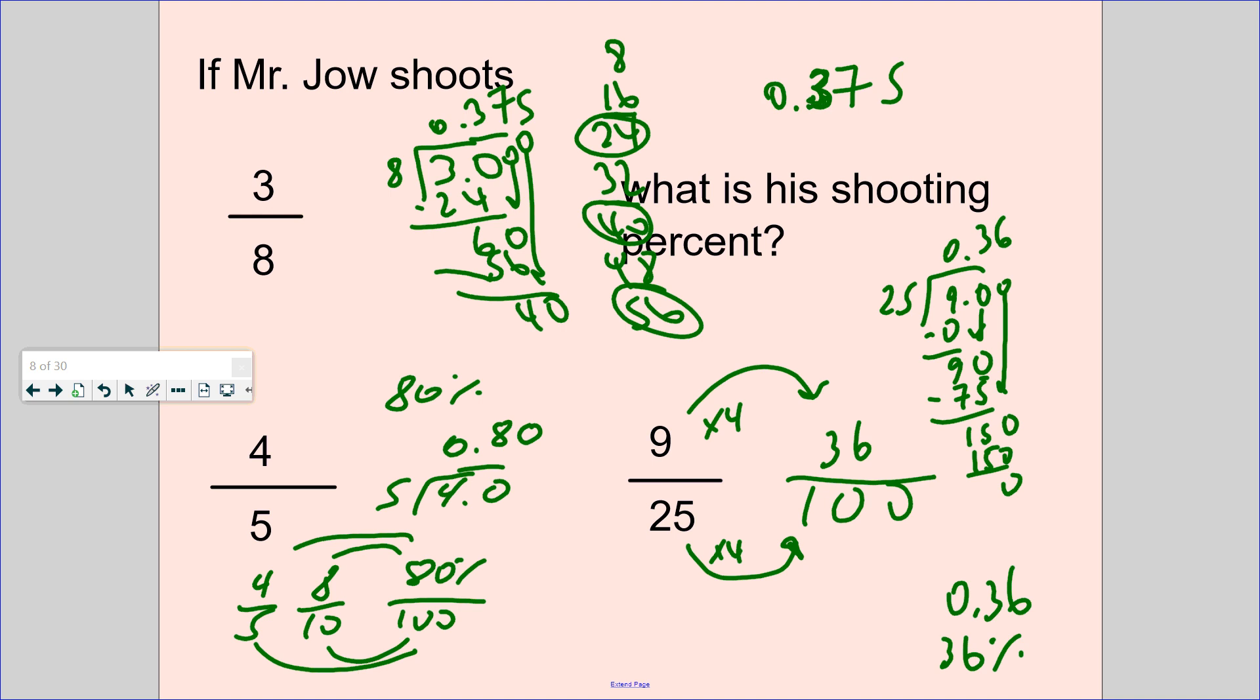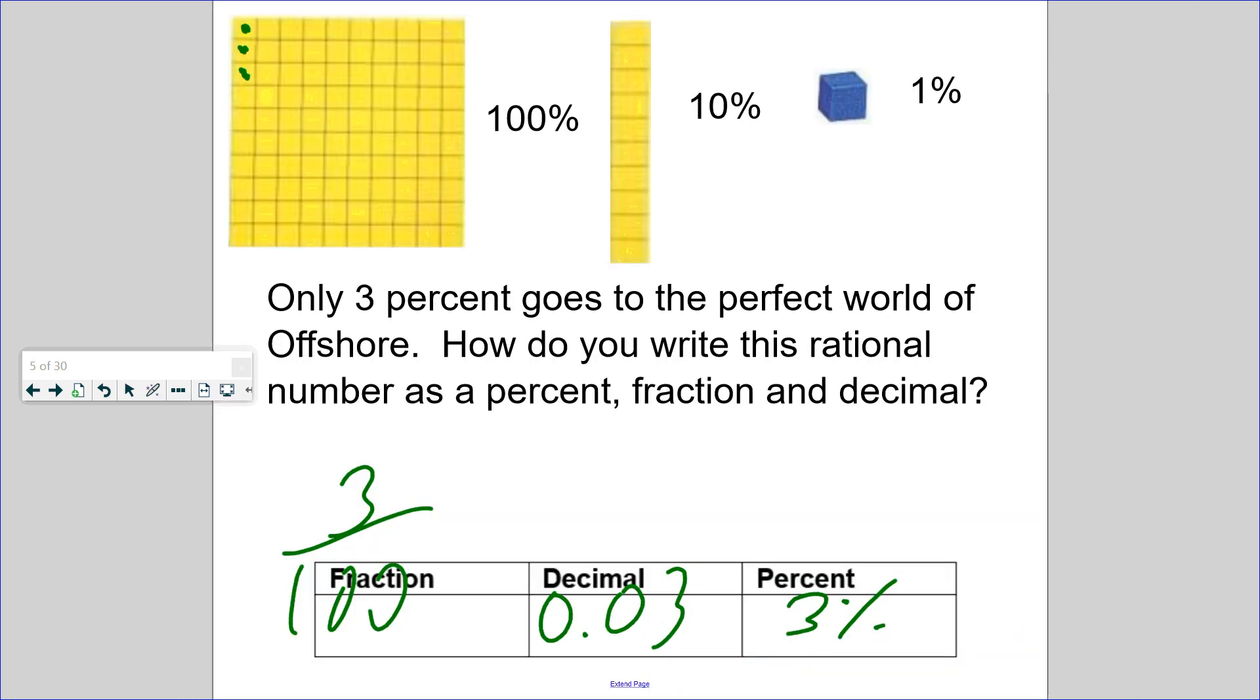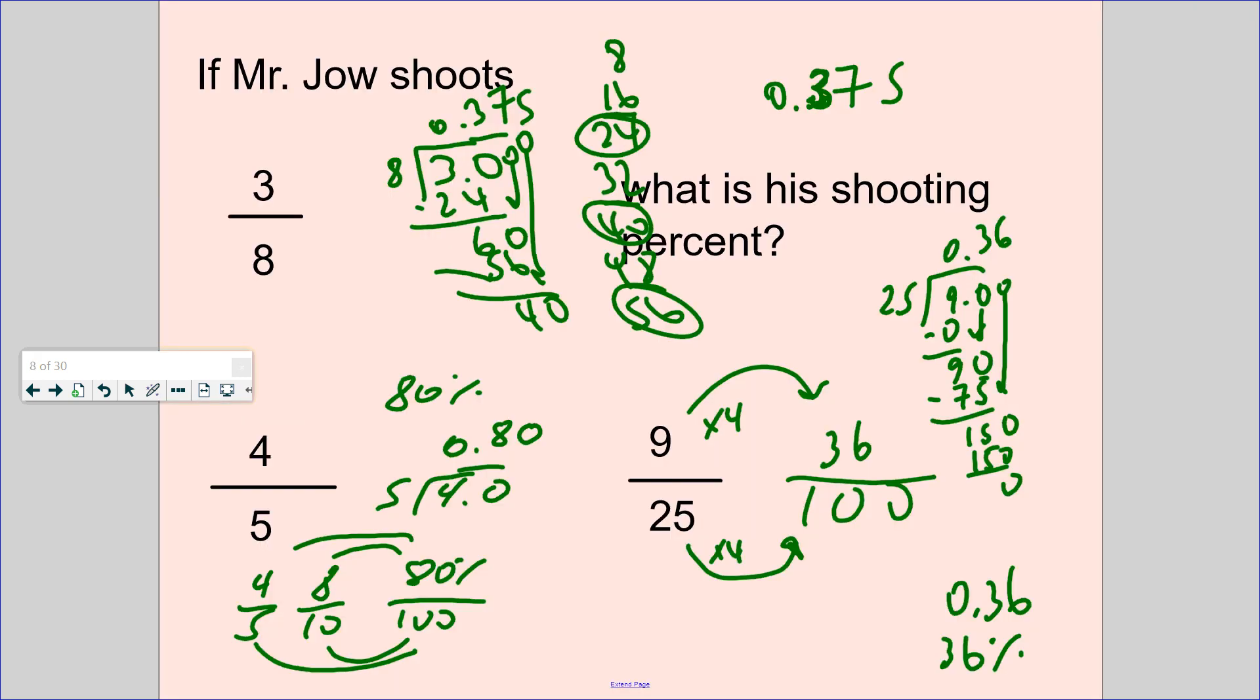So what percent is that? Let's think about our grid right here. If I shade in 0.37 and I have to shade in the half of it, that would be 37.5%. Let's think and estimate. If I covered this up right here, this 5 right here, what percent would that be? 0.37 is 37%. 0.38 is 38%. So if I put a 5 right here, it's halfway between 37 and 38. That's why it's 37 and a half percent.